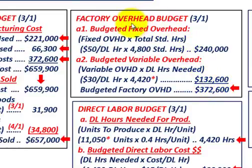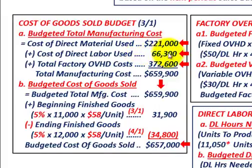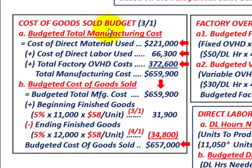Going back to our cost of goods sold budget, our total factory overhead is $372,600. Adding our direct materials of $221,000, direct labor of $66,300, and total factory overhead of $372,600, our total manufacturing cost is $659,900. Now we can determine our budgeted cost of goods sold, starting with the budgeted total manufacturing cost of $659,900.